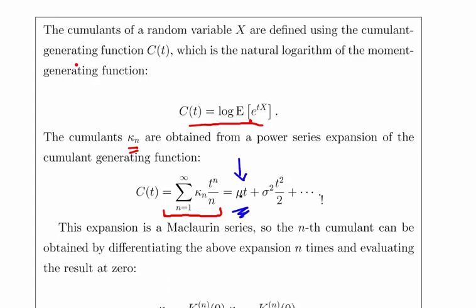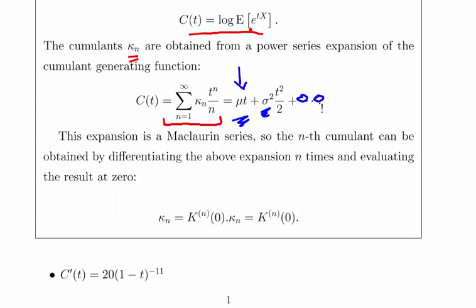The first cumulant is mu, the second cumulant is sigma squared and so on. Depending on the case, the subsequent ones could be 0 and all that. But these first two are the main ones we're interested in.